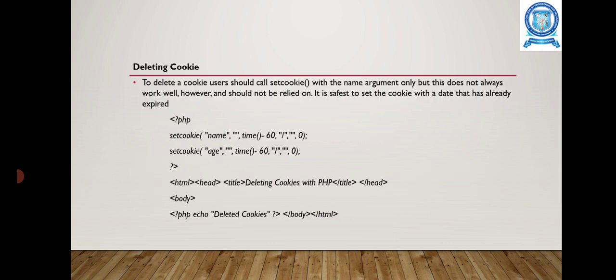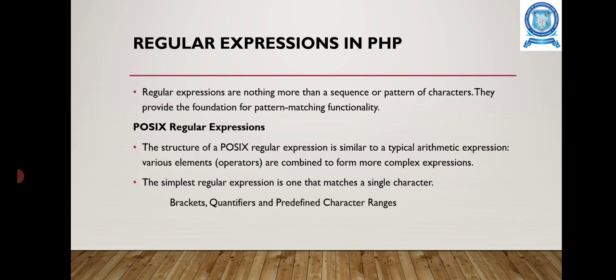Deleting cookie: To delete a cookie, users should call setCookie method with the name argument only, but this does not always work well. However, it is safest to set the cookie with a date that was already expired. Here, the PHP setCookie method is used. First you have to specify the name, then after that you have to specify the age, that means here we should specify the particular expiry date for the particular cookie.